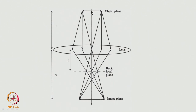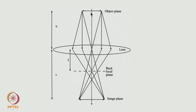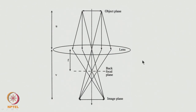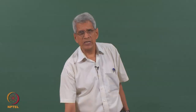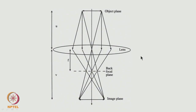By placing apertures either in the object plane or in the image plane, we can decide from which area we want to get the diffraction pattern. Choosing an aperture limits the region from which we get both the diffraction pattern and the image, which is why in an electron microscope we can get both diffraction and microstructure from the same area of the sample.